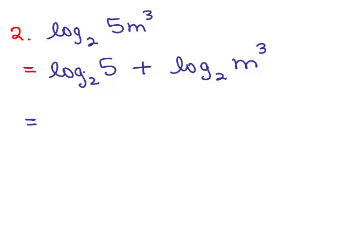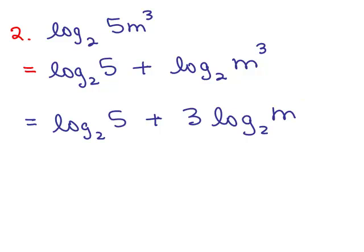Can't do anything with this log of 5 base 2. So I'm going to leave that as log of 5 base 2, and now I could take this exponent from the m and put it out in front and that gives me 3 log of m base 2, and that's the second one.